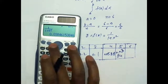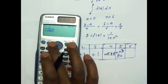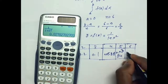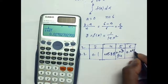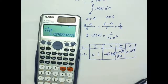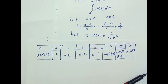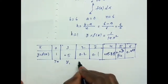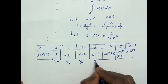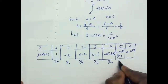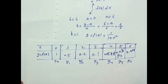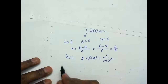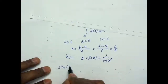For x equal to 6: 1 by 1 plus 6 square equals 1 by 37, approximately 0.027.